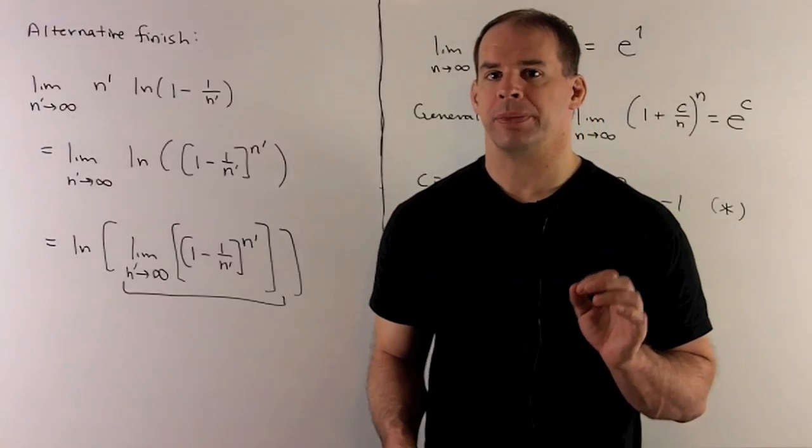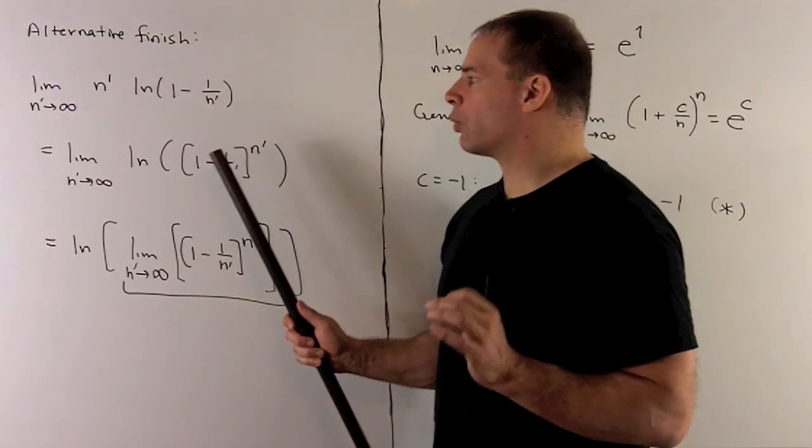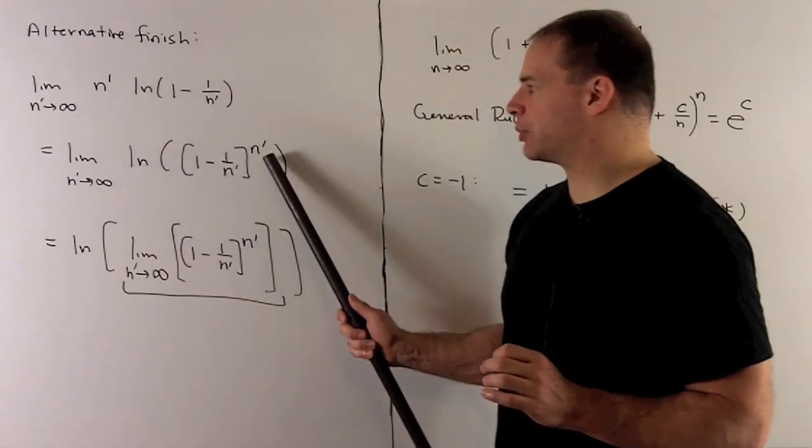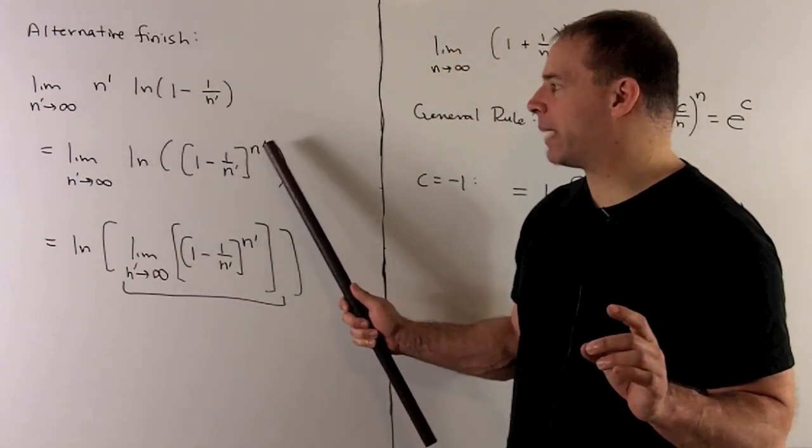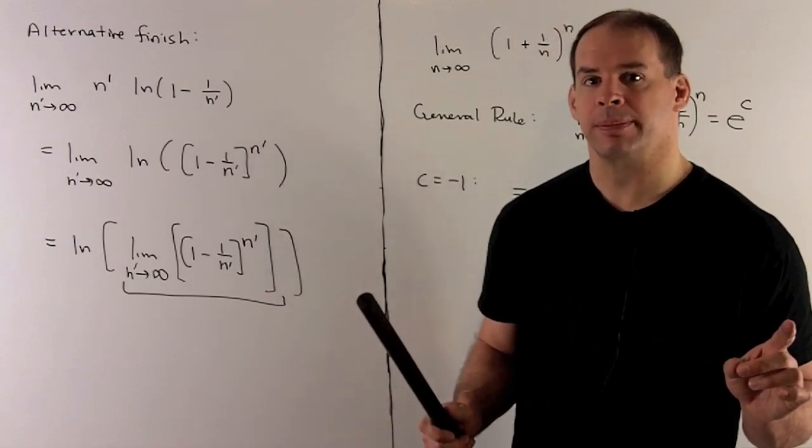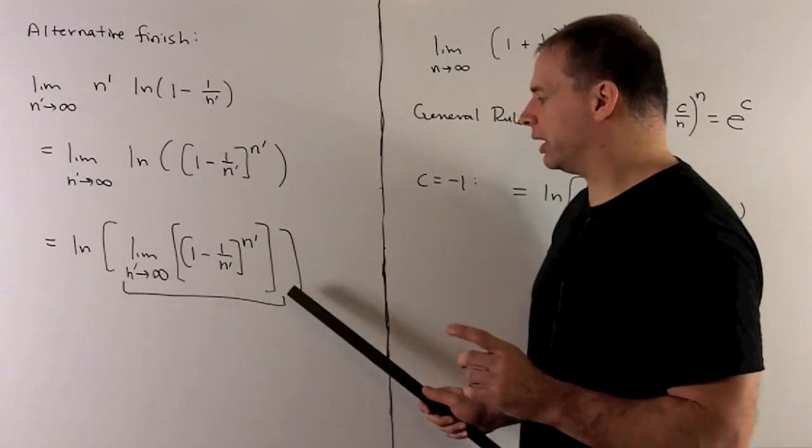Here's another way to finish. So we have this limit here. Using a rule for natural log, if I have a number out in front, we can move that to the exponent of the inside. So I move my n prime over here. Then natural log's continuous, so we're allowed to move the limit to the inside. And then I'm worried about this term here.